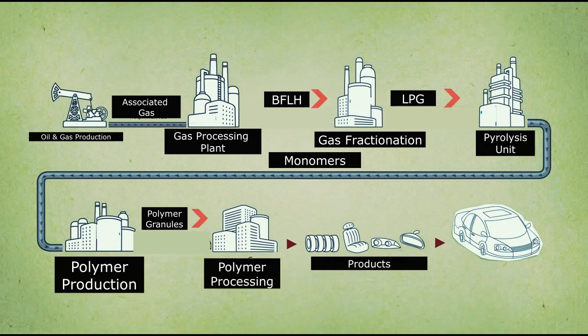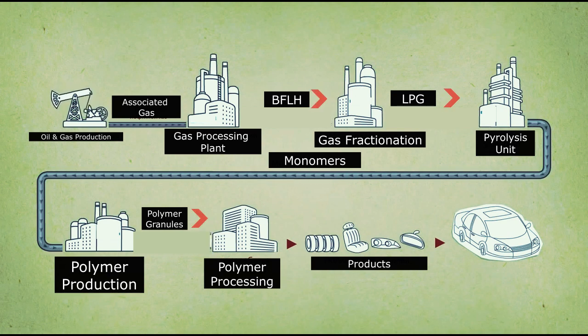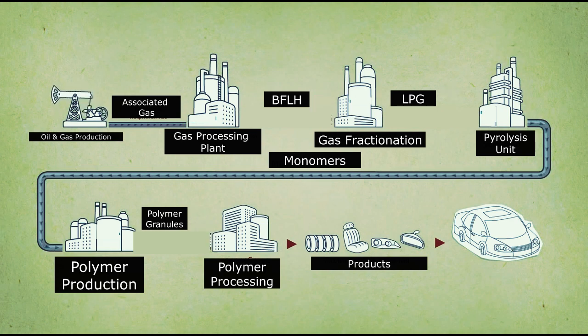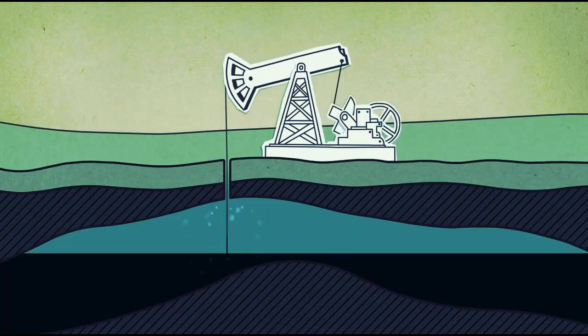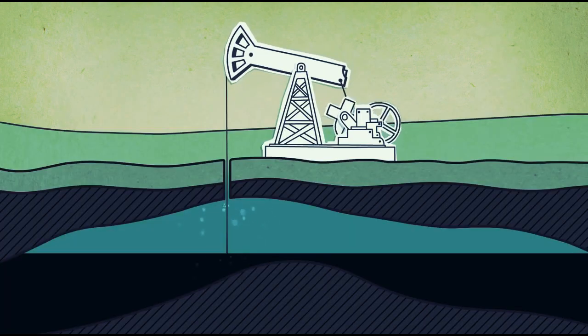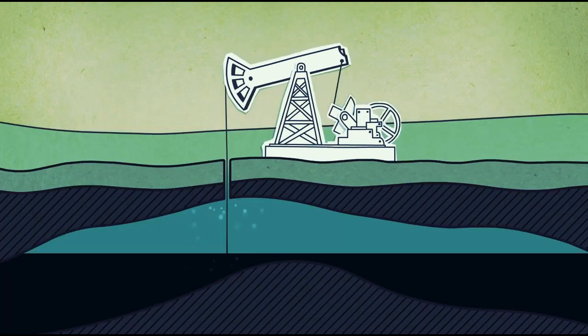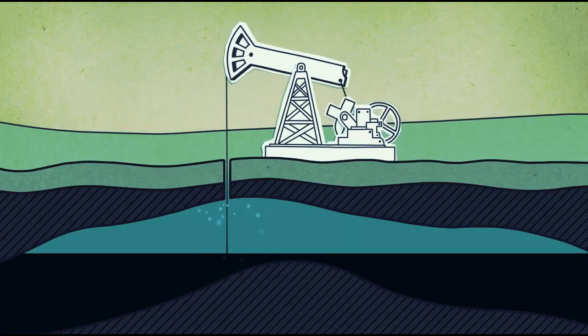The picture shows the importance of associated gas, because from it we can produce polymers like polyethylene, polypropylene, and others. Oil producers extract crude oil using wells and dedicated equipment.